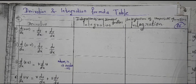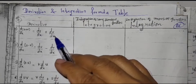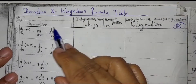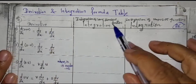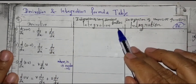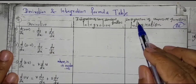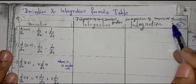Hello friends. In this class we are going to study the derivation and integration formula table. The first column is for derivation, the second column is for integration of some standard functions, and the third column is for integration of some composite functions.